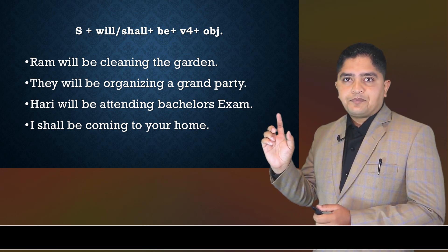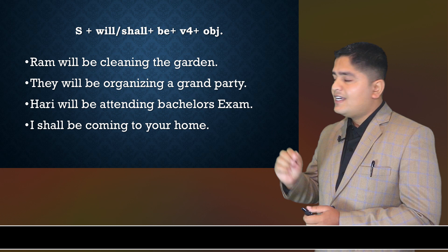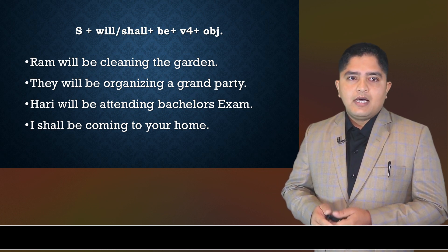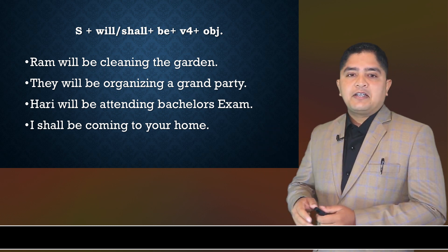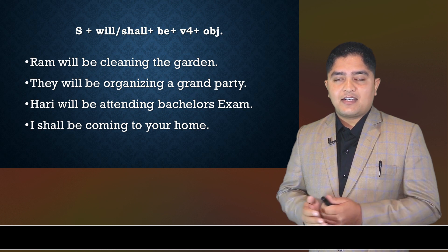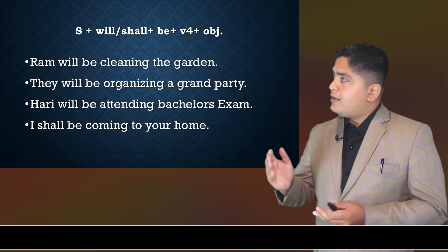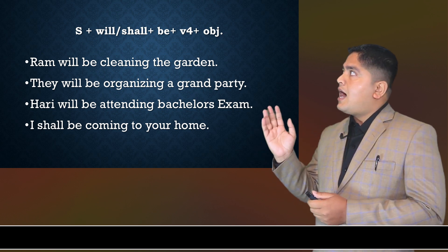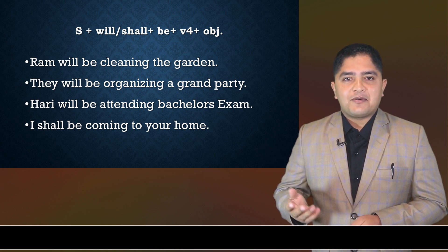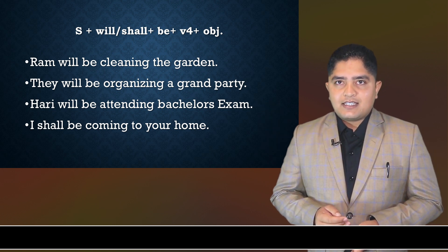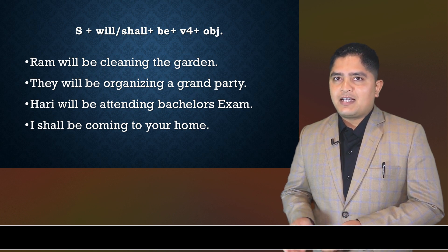Let's see the structure along with examples. The structure is: Subject + will/shall + be + verb(ing) + object. For example: 'Ram will be cleaning the garden.' 'They will be organizing a grand party.' 'Hari will be attending bachelor's examination.' 'I shall be coming to your home.'